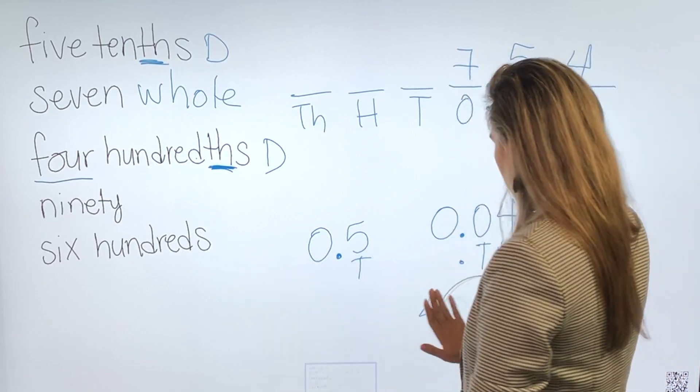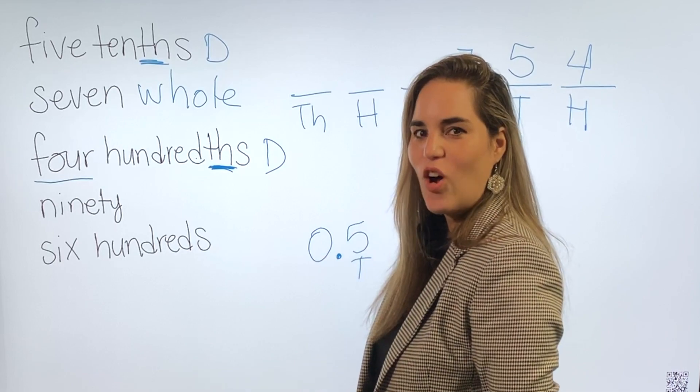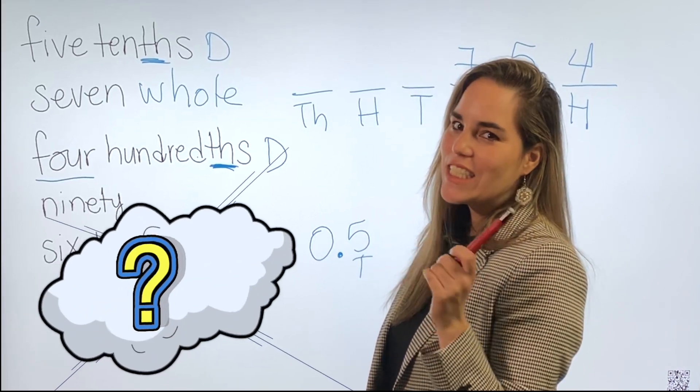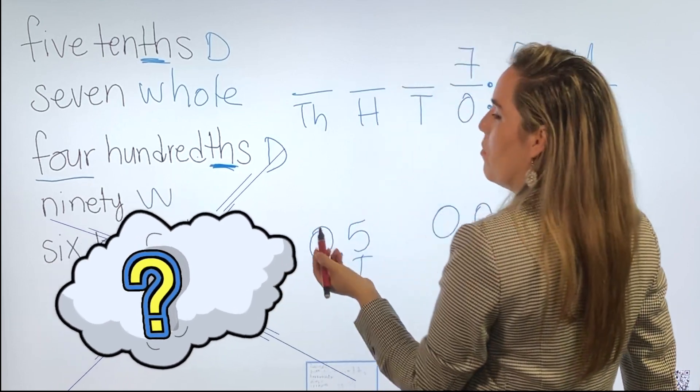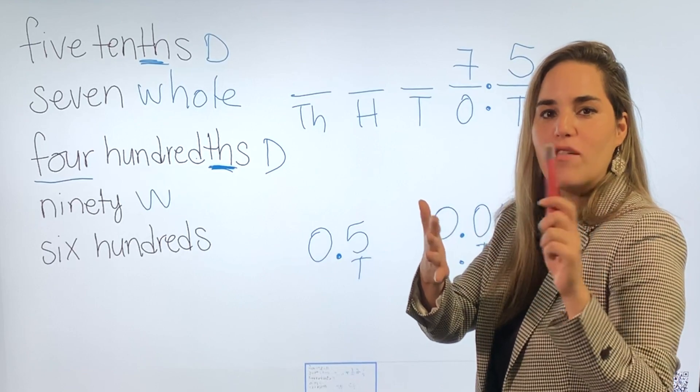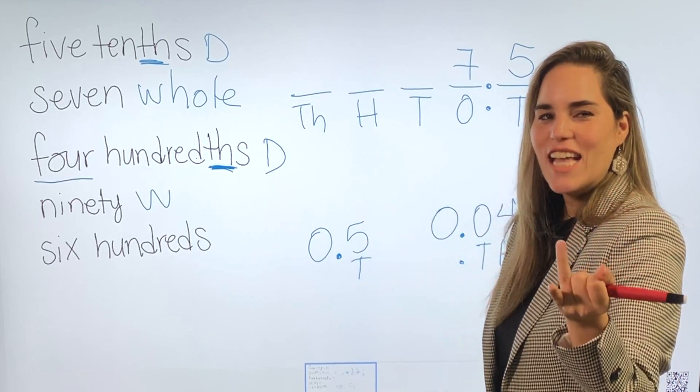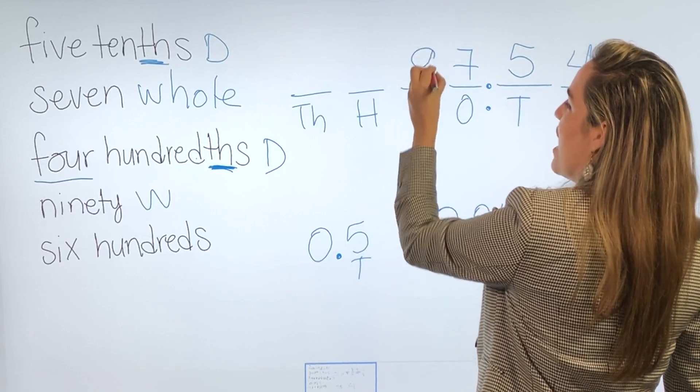Now, let me erase this. We have the number 90. Whole number or decimal? This is a whole number and I'm going to place it on my tens place. 10, 20, 30, 40, 50, 60, 70, 80, and 90.